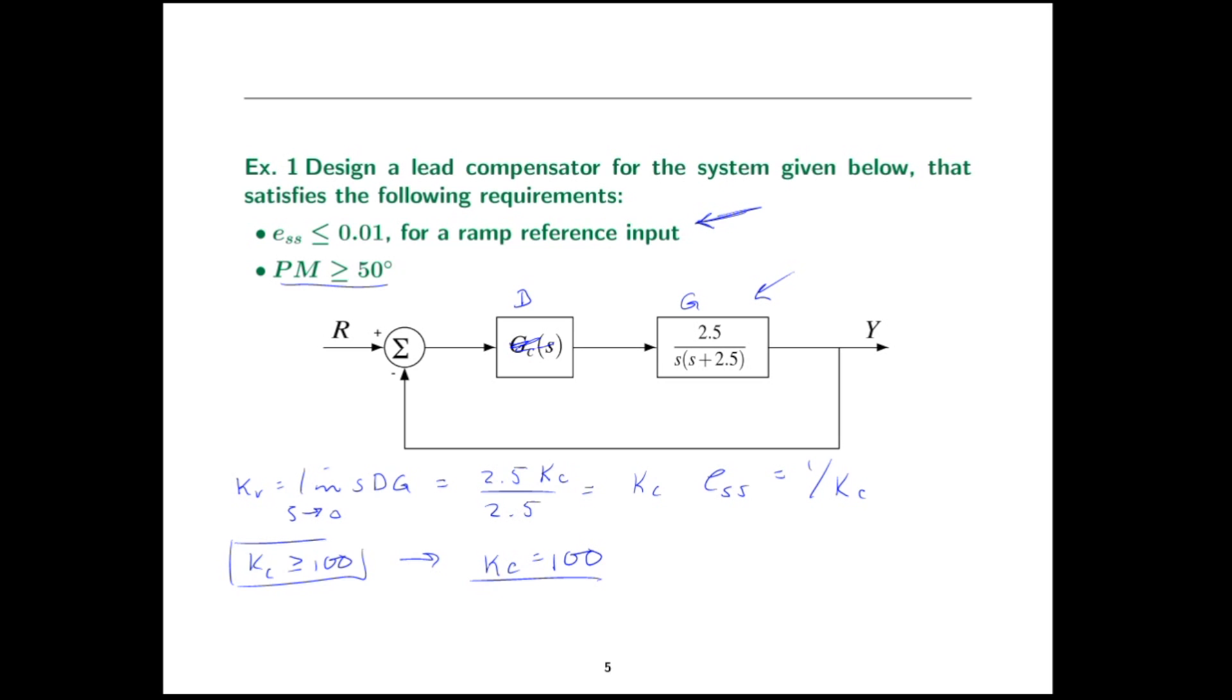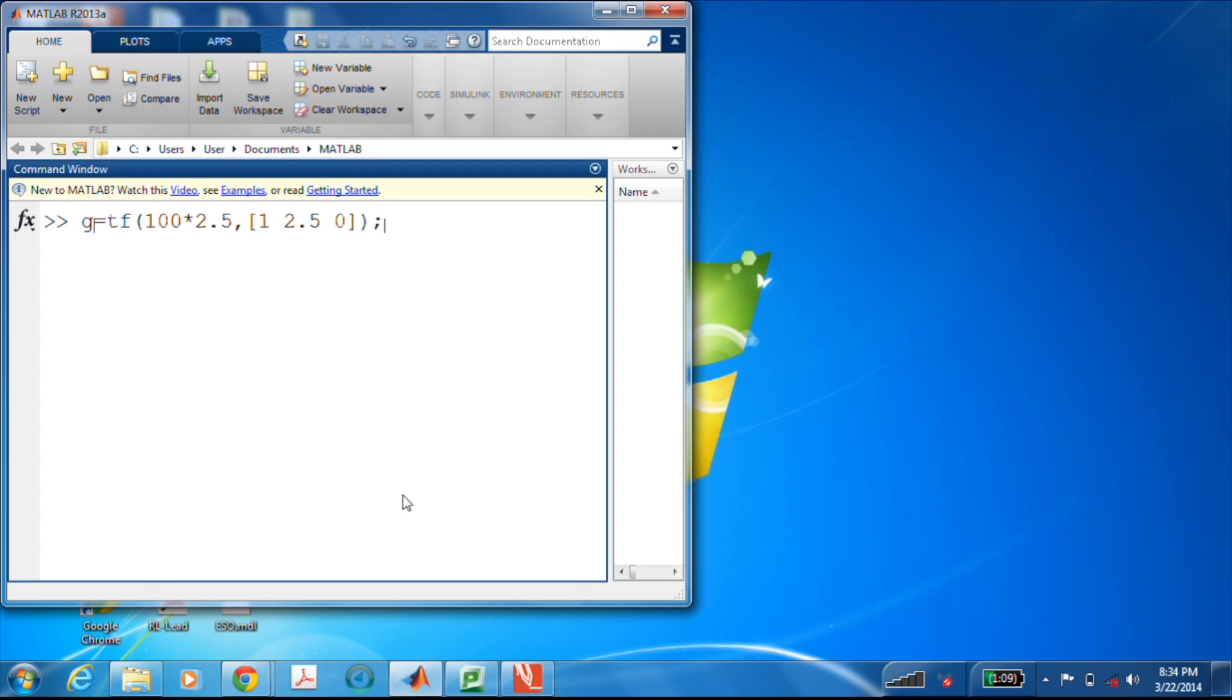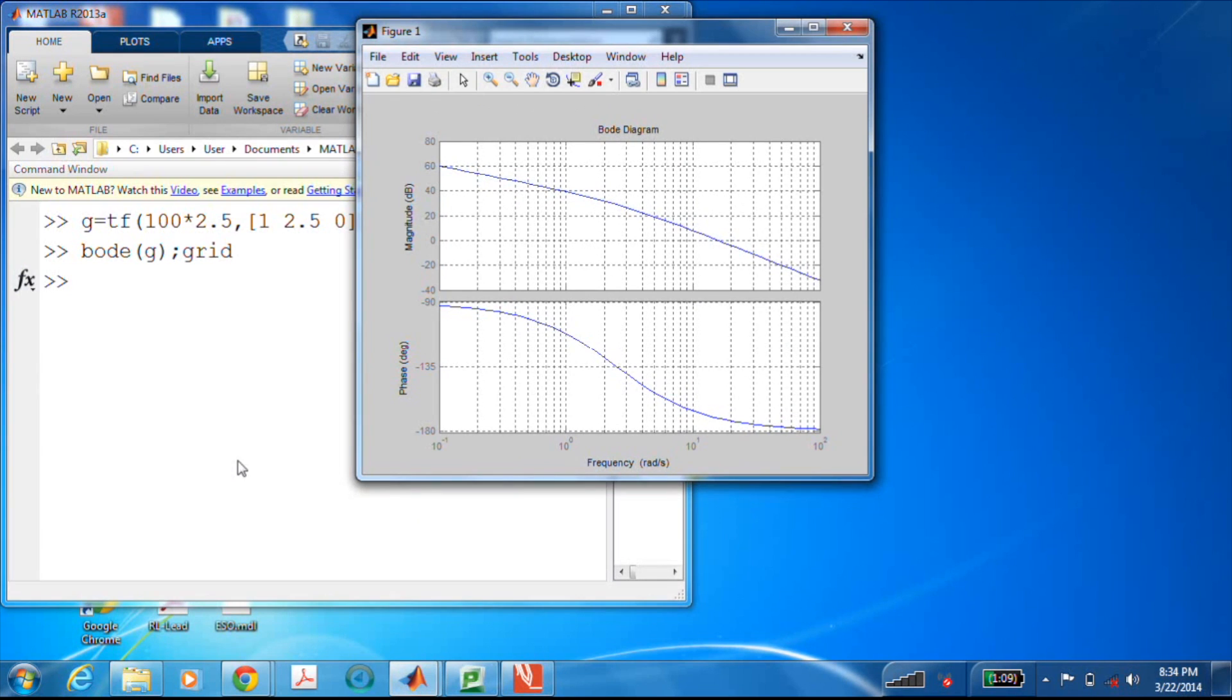Now to do the rest of the design, let's use MATLAB. So here I've coded in the transfer function with the KC of 100. And we'll just use a Bode plot of G to pick off the phase margin and the gain crossover frequency, and then finish off the design using CISO tool after doing a few calculations.